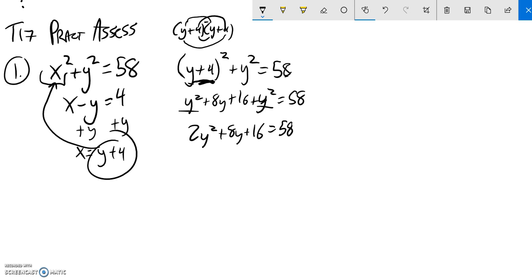Now I have a quadratic, so I want to get it equal to 0 and then solve it. I'll subtract 58 from both sides, so that leaves me 2y² + 8y - 42 = 0.